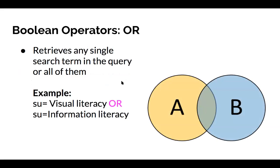The next operator, OR, returns items that contain any single term in the query or all of them. For example, when searching the subject headings 'visual literacy OR information literacy,' this will yield results containing items that have either subject assigned or both.